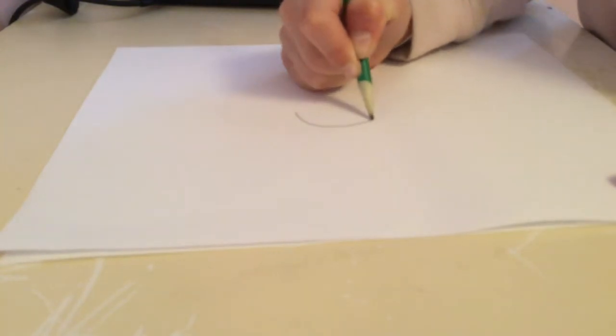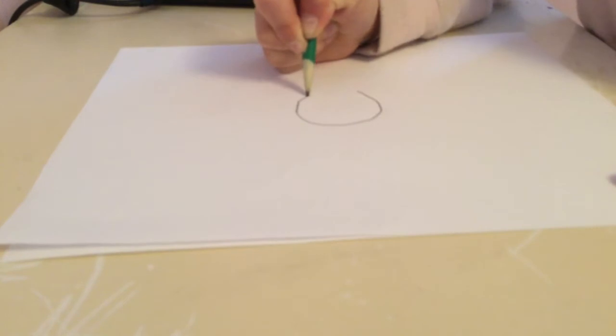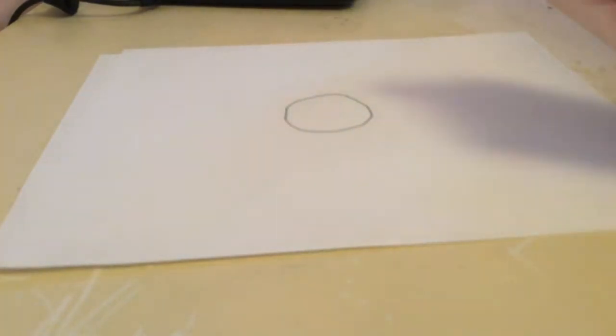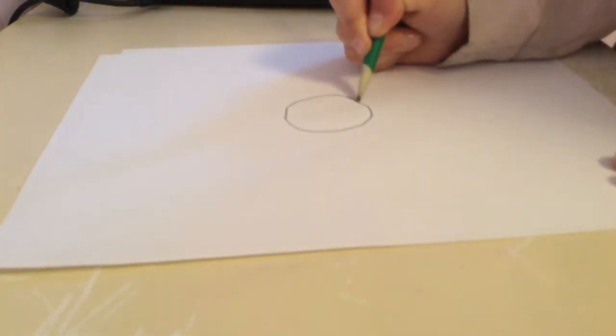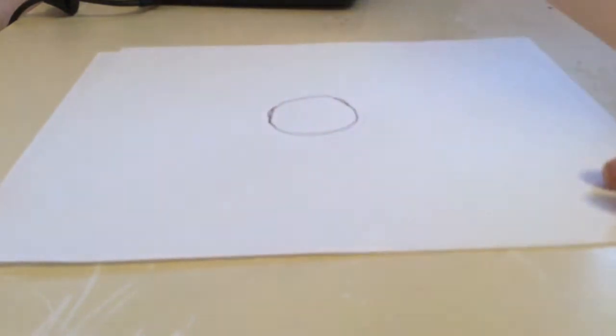To start, you're going to draw a circle. This is going to be how big your grapefruit is. If you want a small grapefruit, draw a small circle; this is kind of medium. It doesn't have to be perfect - I can fix it up. We're gonna trace it over at the end with black sharpie.